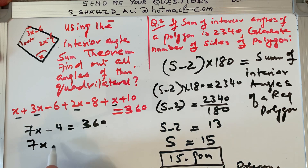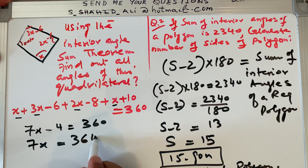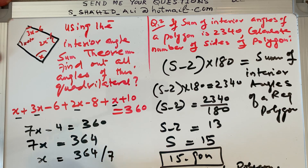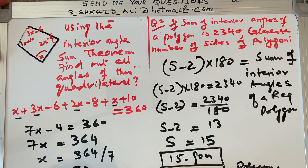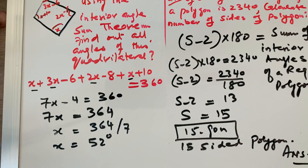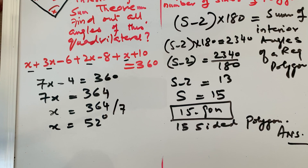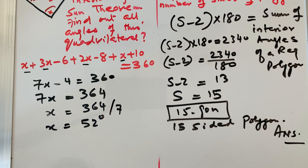Transferring the minus 4 to the other side: 7x equals 364. Dividing both sides by 7: x equals 364 divided by 7, which gives x equals 52 degrees. Now that we know x, we can calculate all the other angles.